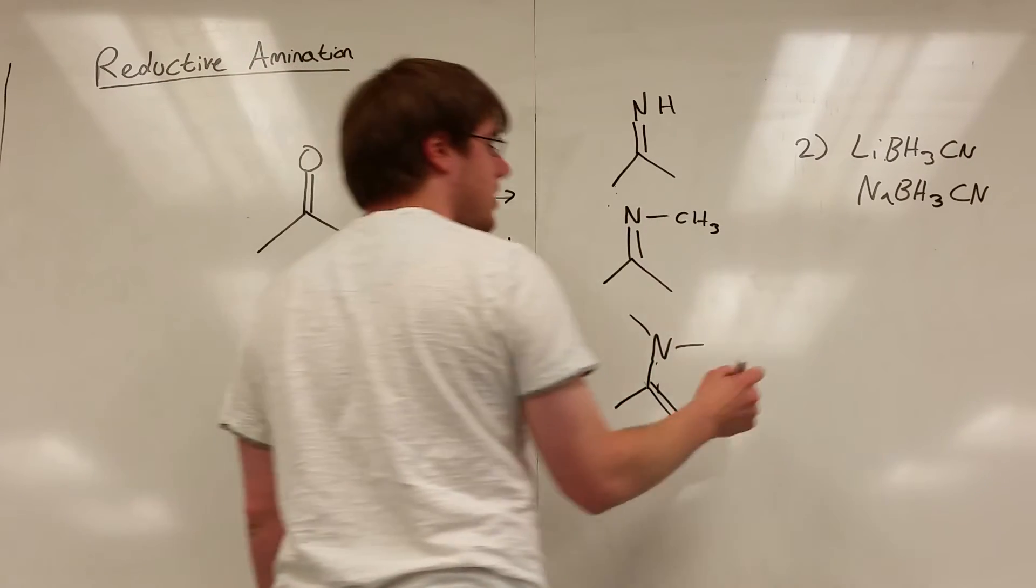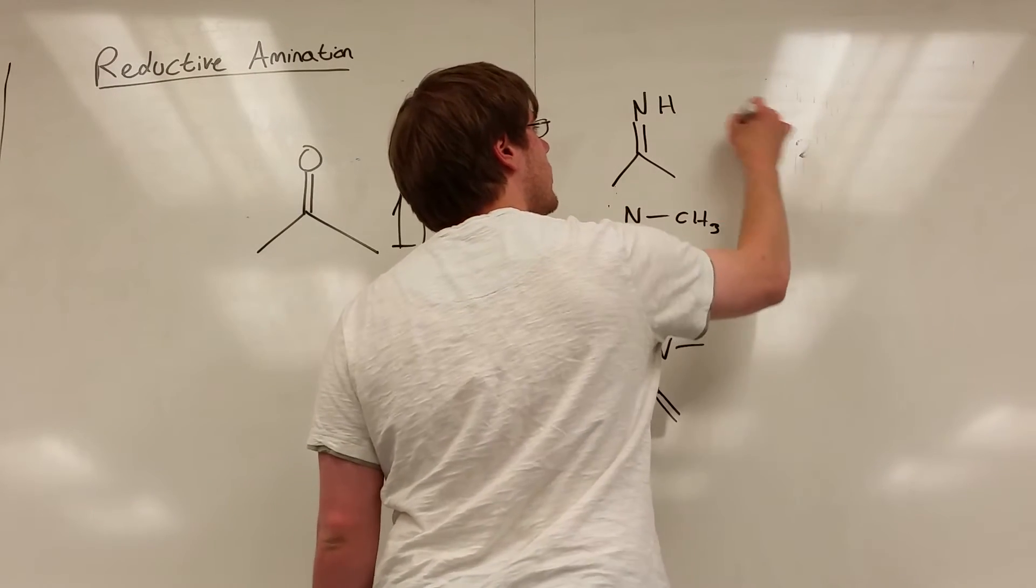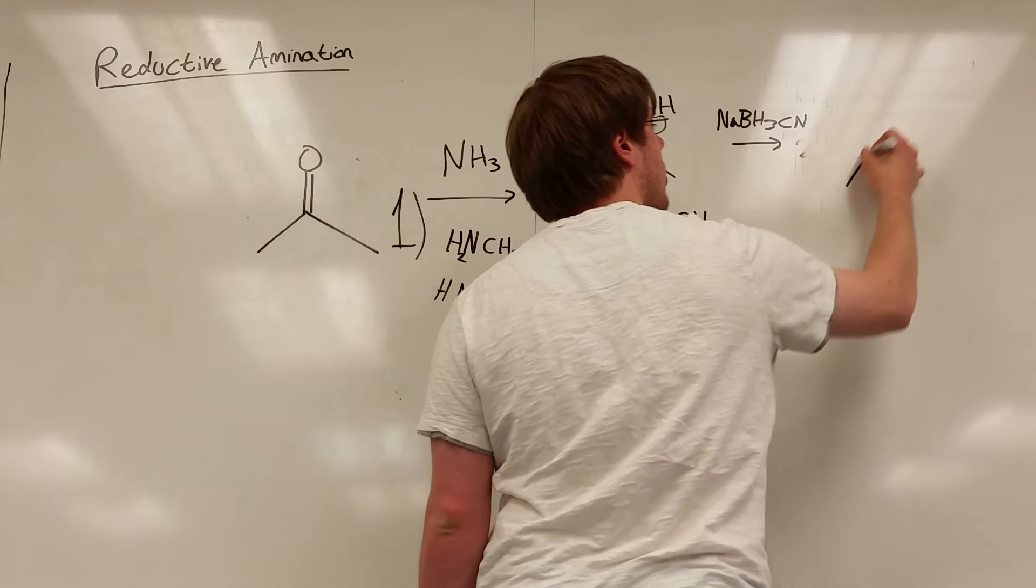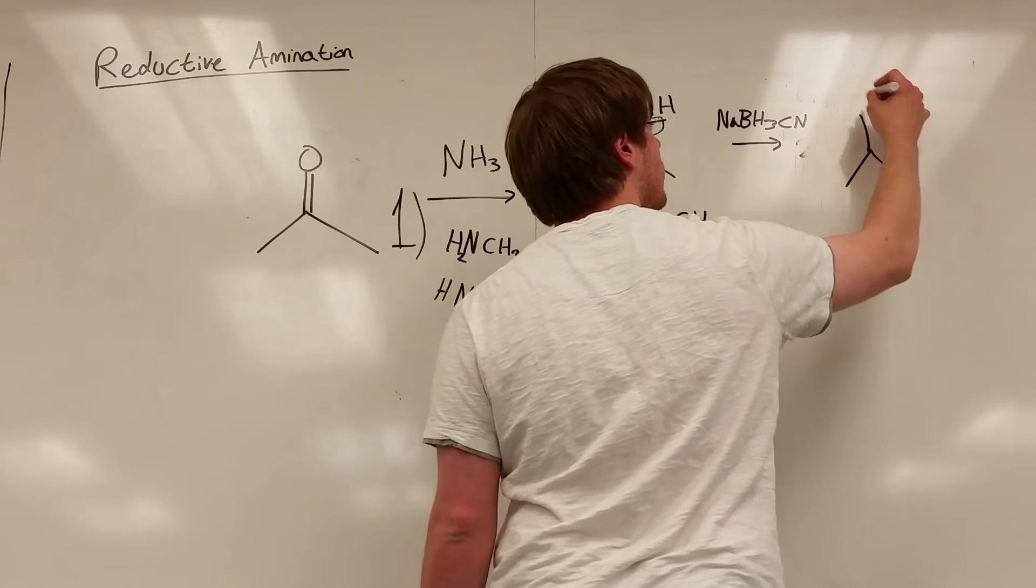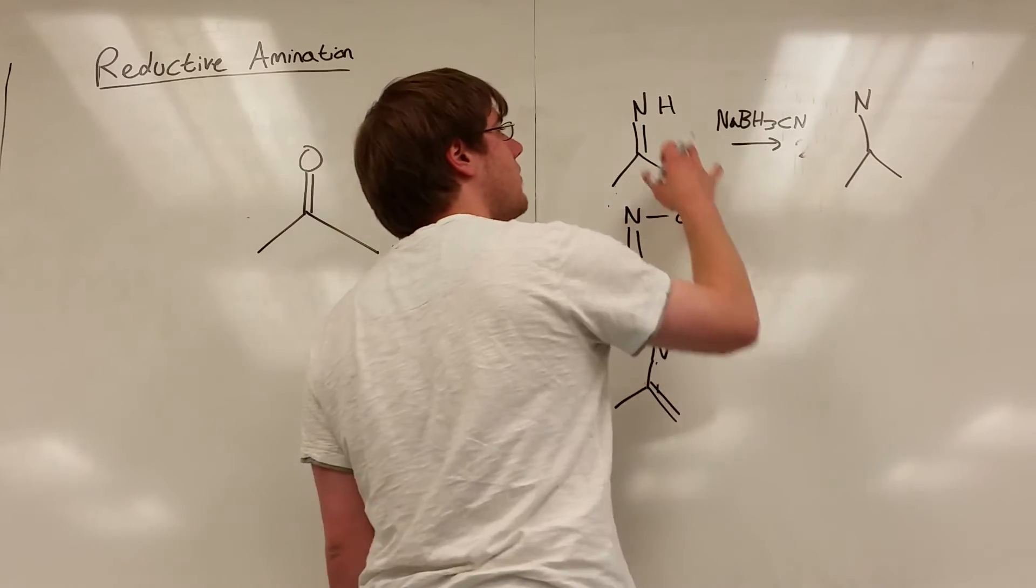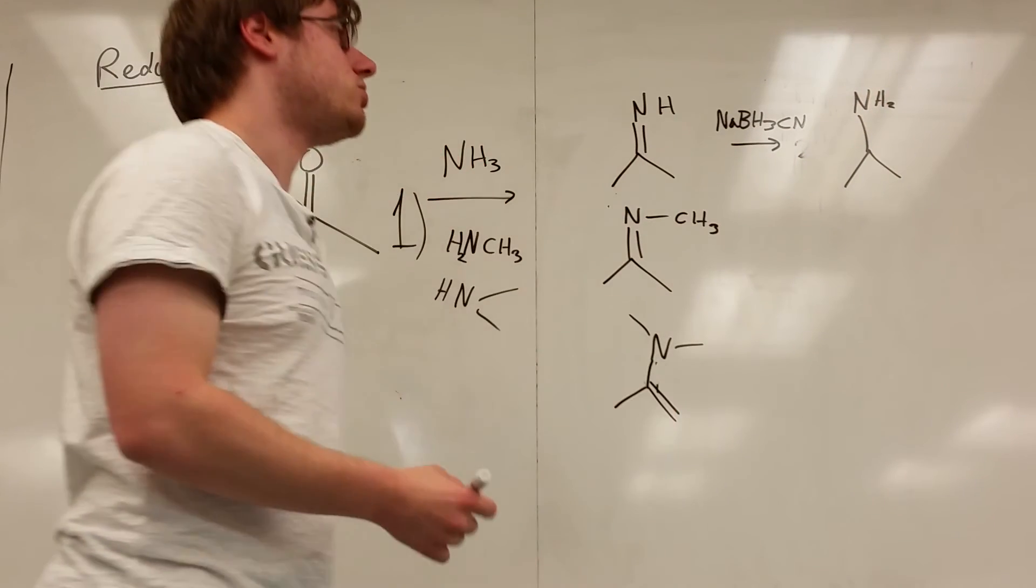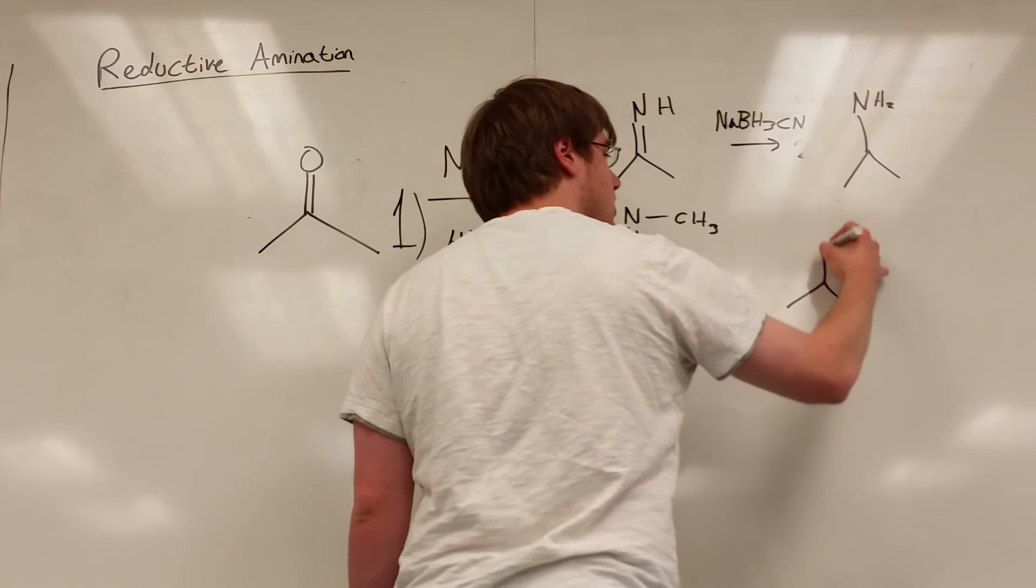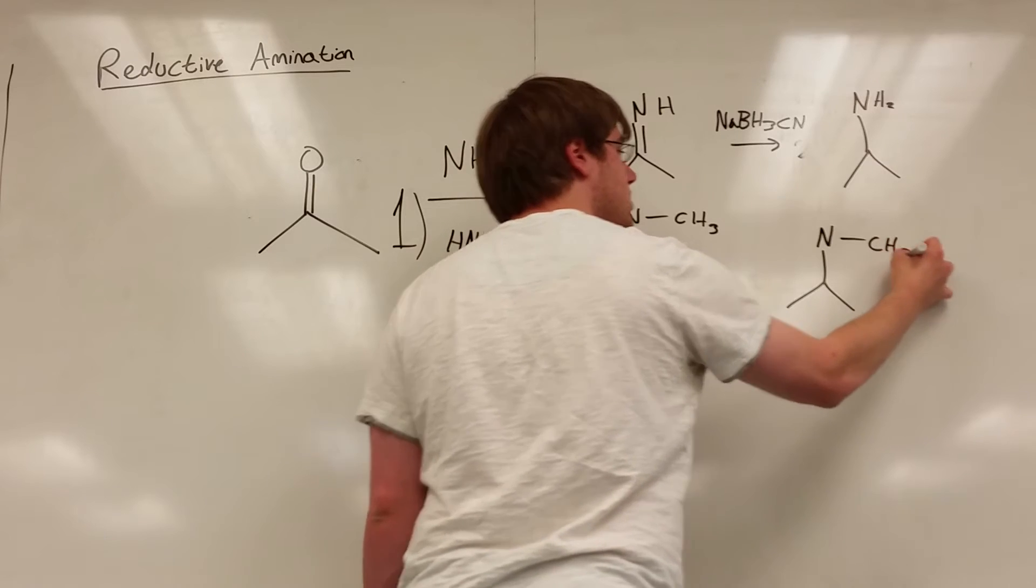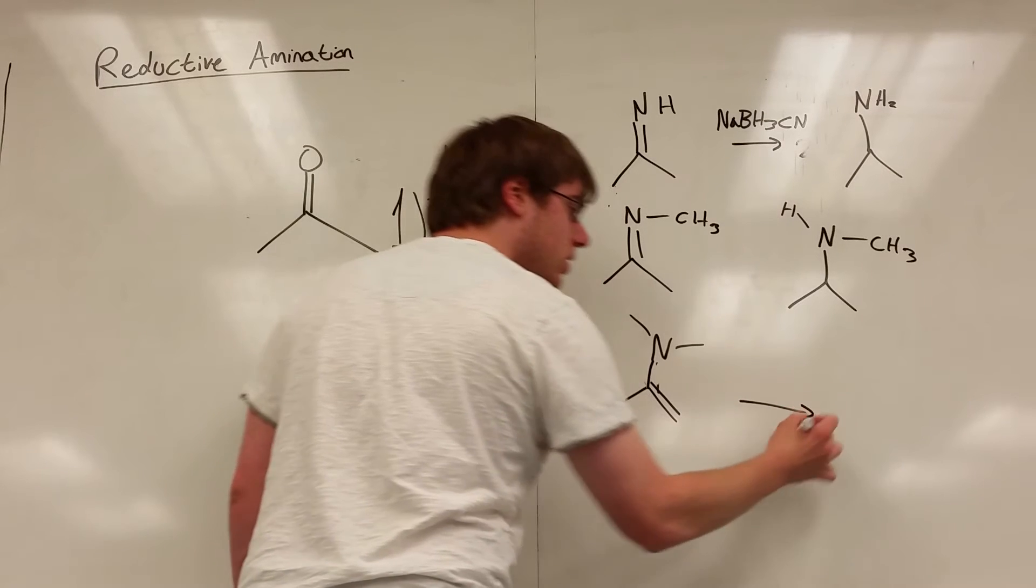So if I had this thing over here with NaBH3CN I would get carbon nitrogen single bond and now I just have to add hydrogens to the nitrogen so it's neutral. So if I want it to be a single bond that nitrogen needs two hydrogens to be neutral because the nitrogen with three bonds is neutral. And here I make the carbon nitrogen double bond a single bond, now it had one methyl, this nitrogen needs one hydrogen on it to be neutral.